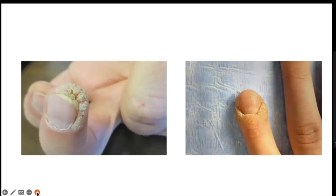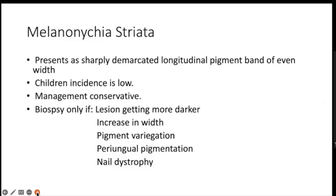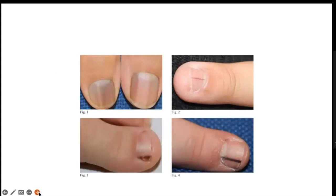Melanonychia striata presents as a sharply demarcated longitudinal pigment band of even width. The incidence in children is low, and management is conservative. However, biopsy is required if the lesion becomes darker, if there is an increase in the width of the band, pigment variegation, periungual pigmentation of the proximal nail fold, or nail dystrophy. These are the reasons to perform a biopsy.